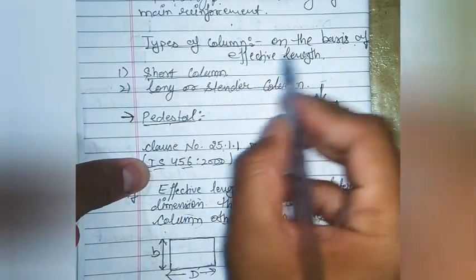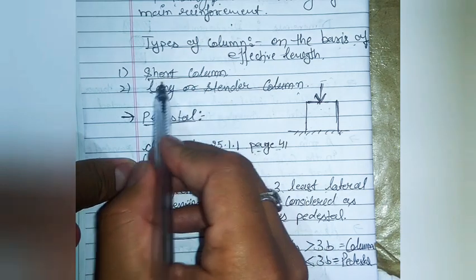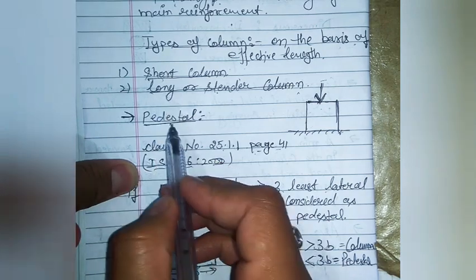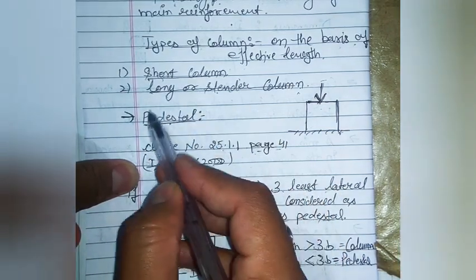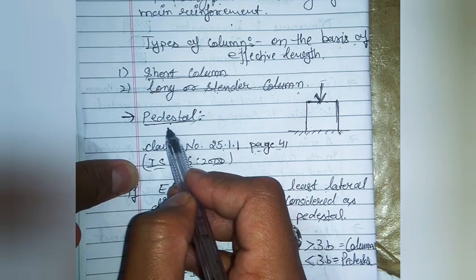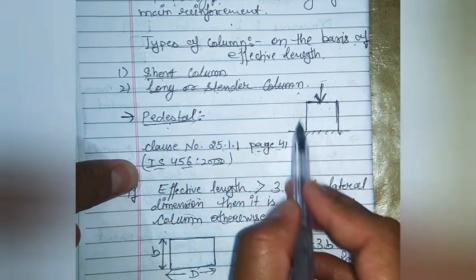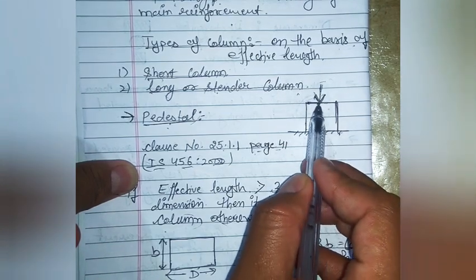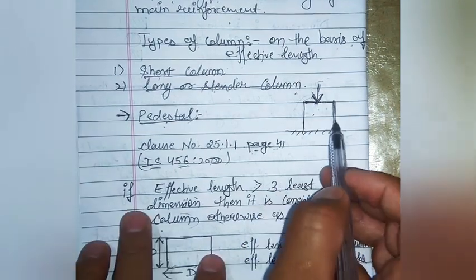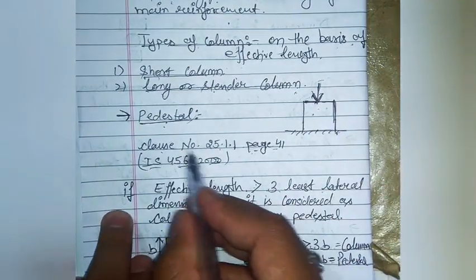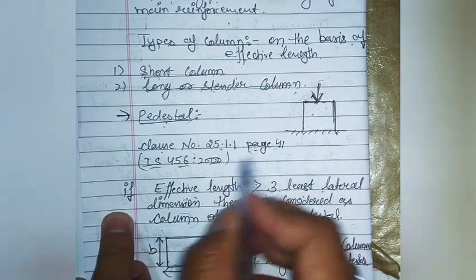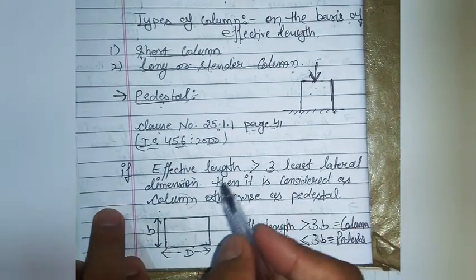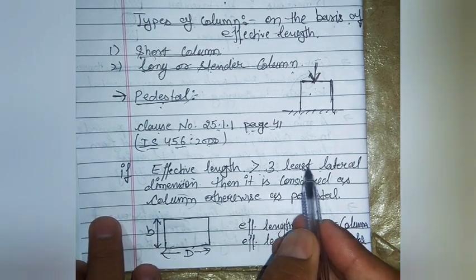On the basis of effective length, we differentiate columns into short columns and long columns (or slender columns). There is also the term 'pedestal.' A pedestal is a short construction with certain dimensions like a column; it also carries axial load and can have bending. This is given in clause 25.1.1, page 41 of IS 456:2000. If the effective length is greater than three times the least lateral dimension, it is considered a column.